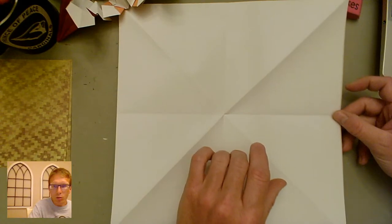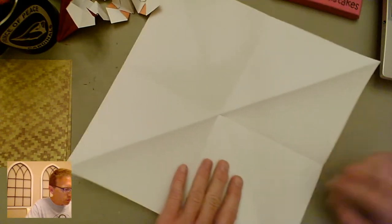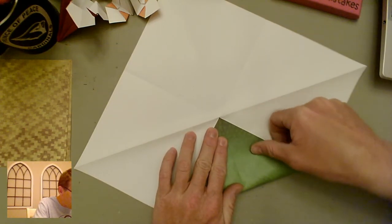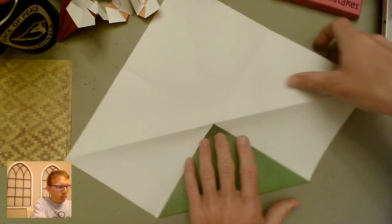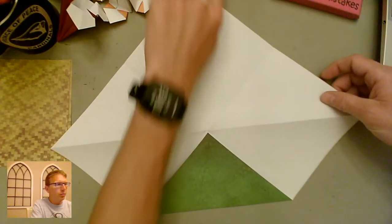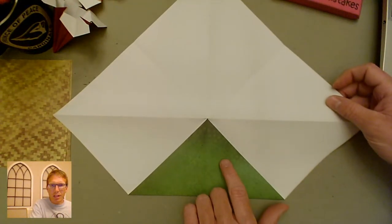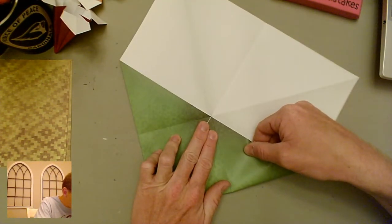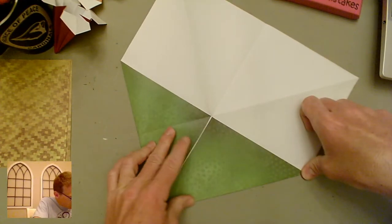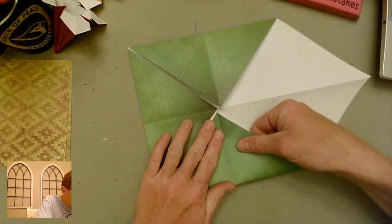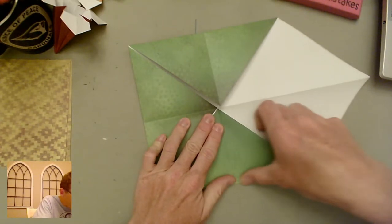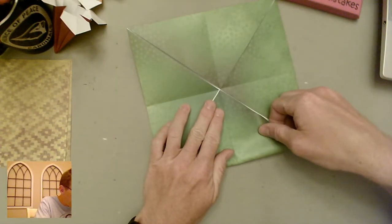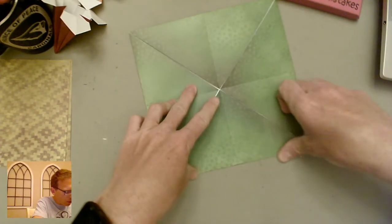So now I'm going to do what's called a blintz fold. Which is by folding the triangles into the center, we're going to make a smaller square. So I'm going to take each corner and move it to the middle and lined up in the center. This is called a blintz fold. And we're going to fold those all in to the center.